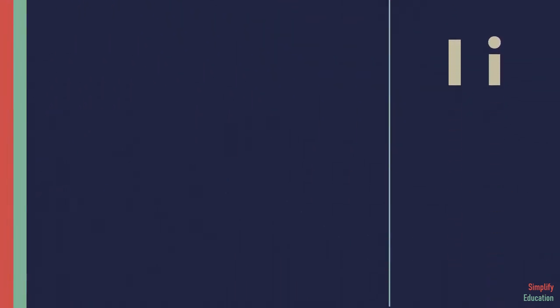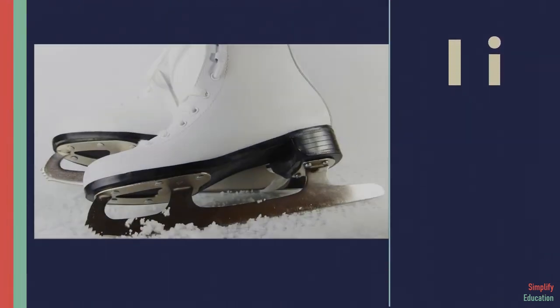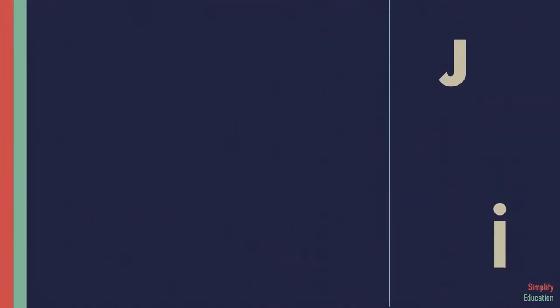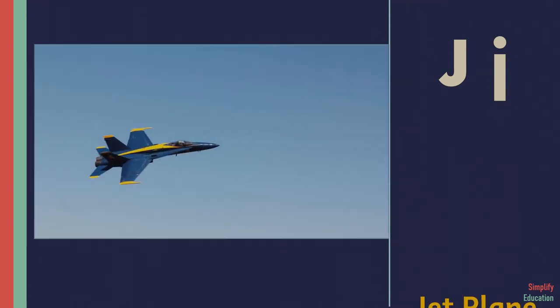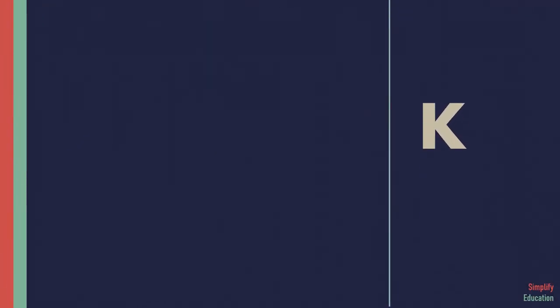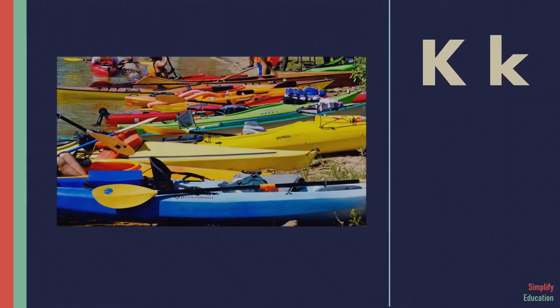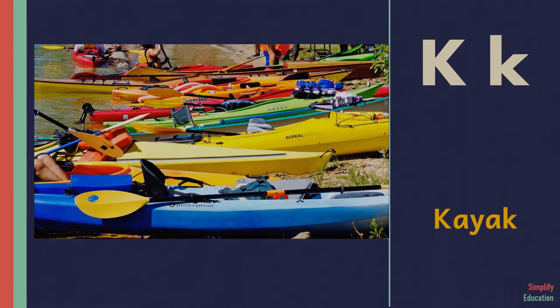I for ice skates. J for jet plane. K for kayak.